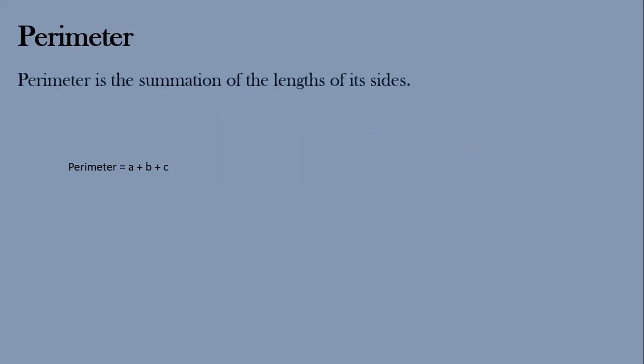So what do we understand by perimeter? Perimeter is actually the summation of the lengths of its sides. Whatever the shape — for example, a triangle with sides a, b, and c — its perimeter is the summation of those sides. In the simplest sense, perimeter is actually the length of the boundary.